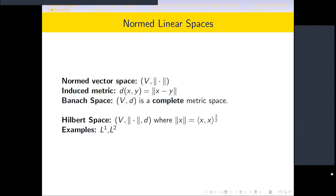Given a normed space you can always induce a metric, which is the norm of x minus y, where x and y are two vectors from the vector space. If the pair of the space B and the metric D is a complete metric space, then it is called a Banach space. Hilbert spaces are special Banach spaces where the norm comes from an inner product. Examples include L2 and L1 spaces.